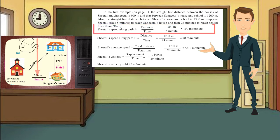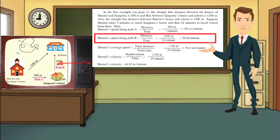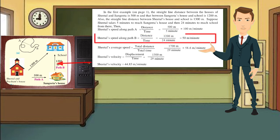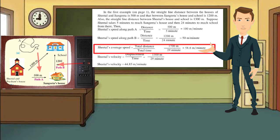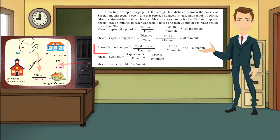Sheetal's speed along path A: speed equals distance divided by time. Distance is 500 meters and time is 5 minutes, so speed is 100 meters per minute. Sheetal's speed along path B: distance is 1200 meters and time is 24 minutes, so speed is 50 meters per minute. Sheetal's average speed: total distance 1700 meters divided by total time 29 minutes equals 58.6 meters per minute.